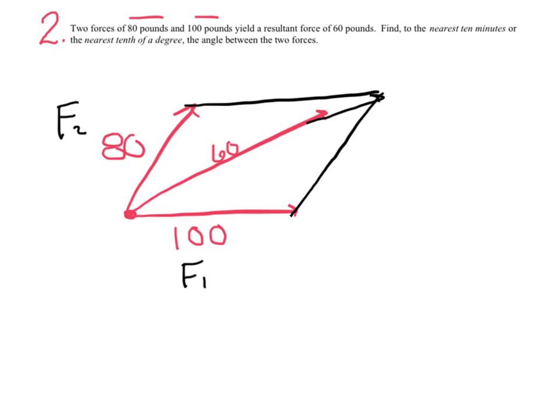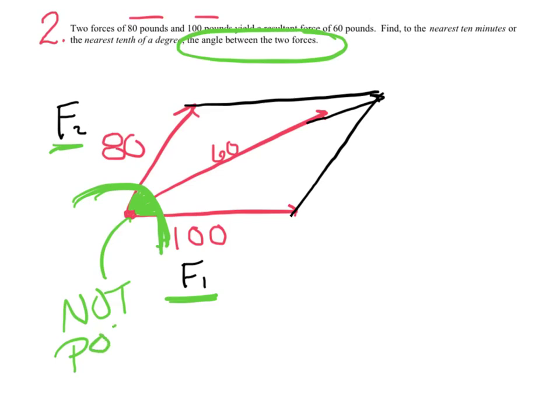All right, so keep reading. Find to the nearest ten minutes or nearest tenth of a degree the angle between the two forces. So since those are my only two forces, the angle between them is this whole angle. Now remember, that whole angle is not in either triangle. Bits and pieces are in two triangles. So you can't actually get that. So I just want to say it's not possible to get that right away.